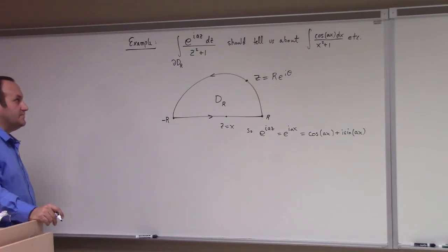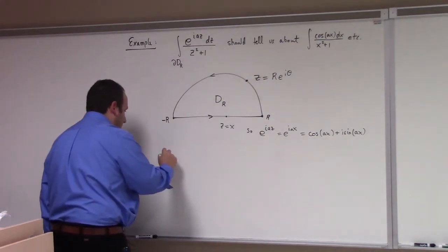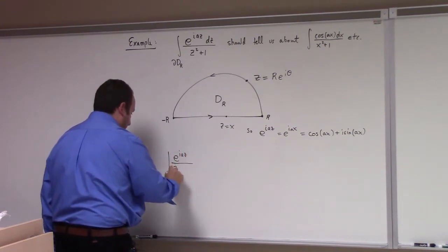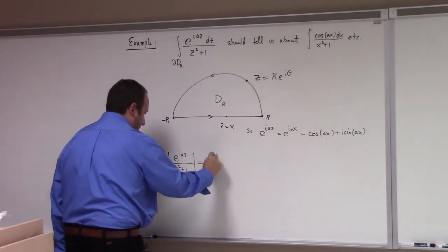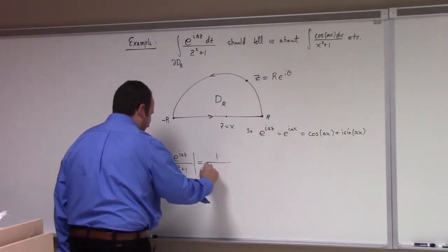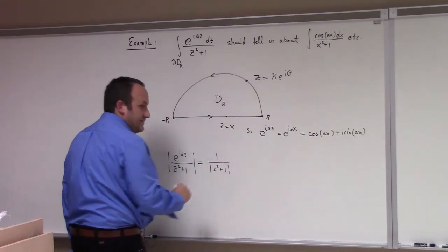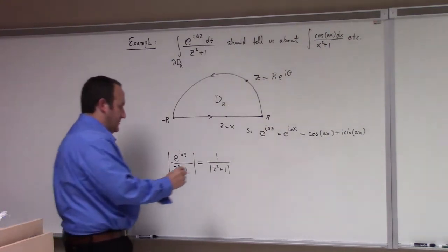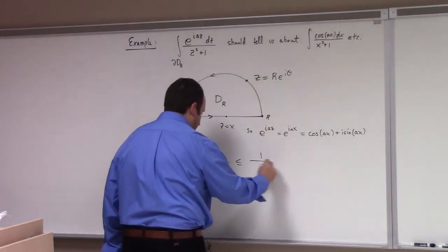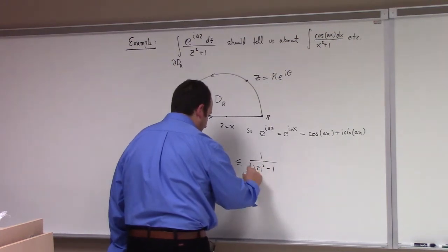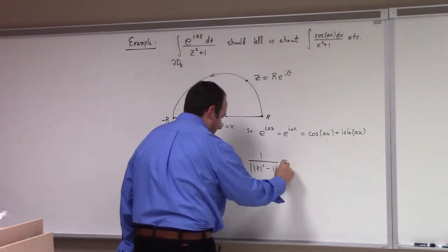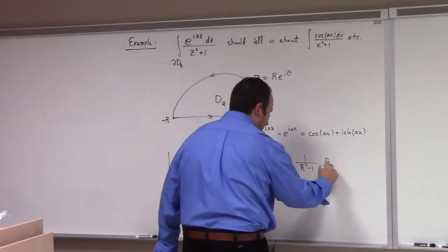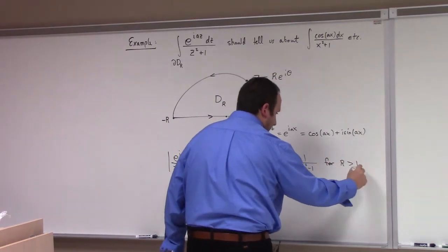Why is that? Well, if you look at the modulus of e to the iaz over z squared plus 1, that's equal to 1 over the modulus of z squared plus 1 — because e to the iaz is unimodular, it's got modulus 1. And so that's of course less than or equal to 1 over the modulus of z squared minus 1 absolute value, which is going to be less than or equal to 1 over r squared minus 1 for r greater than 1.